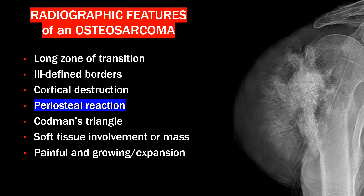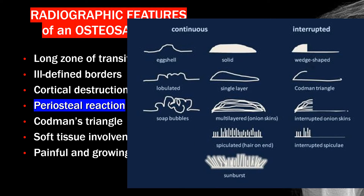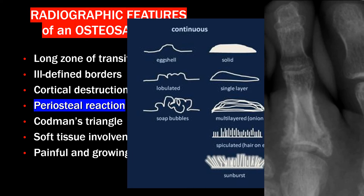A periosteal reaction on an x-ray is a significant finding indicating an abnormal process affecting the bone. The periosteum is a layer of connective tissue surrounding the bone, and a periosteal reaction occurs when this layer becomes irritated, leading to new bone formation. A solid periosteal reaction usually indicates a slower, more benign process, whereas a spiculated or sunburst pattern is commonly seen in aggressive conditions like osteosarcoma.